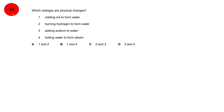Question 13: which changes are physical changes? Remember that whenever there is a change of state — for example, melting, freezing, condensing, evaporating — it is regarded as a physical change. So melting ice to form water is a physical change, and boiling water to form steam is a physical change. A process in which new substances are formed is regarded as a chemical change.